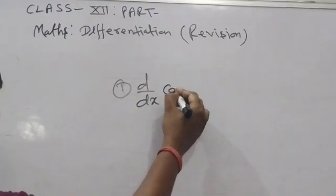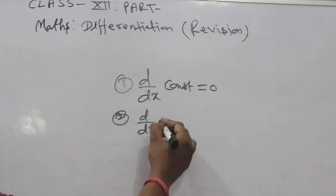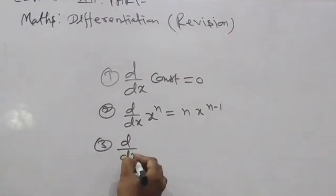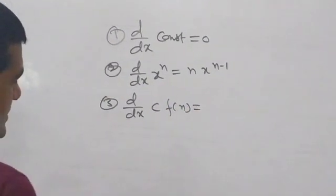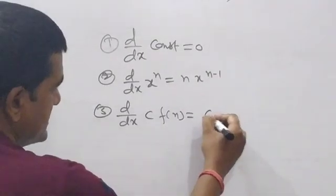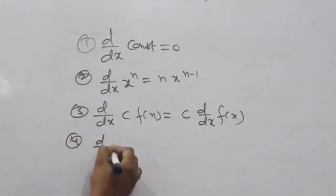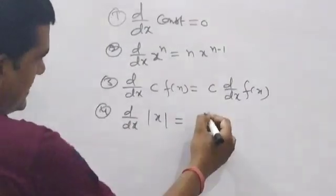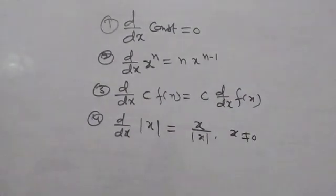Formula: d/dx of a constant number is equal to 0. d/dx of x^n is equal to n into x^(n-1). d/dx of c times a variable — if there is a constant times a variable, keep the constant and differentiate the variable. And d/dx of |x| means x upon |x|, where x is not equal to 0.